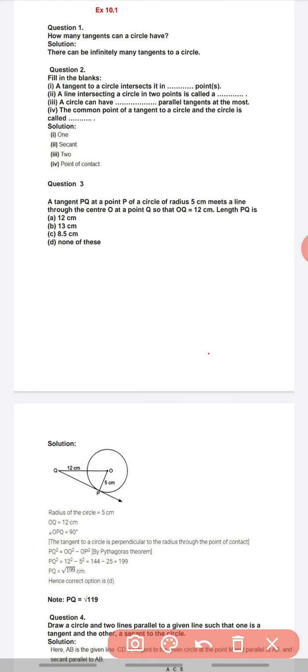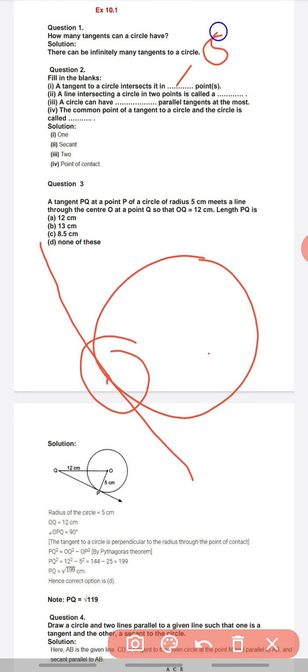Question number second, fill in the blanks: A tangent to a circle intersects in dash points. Agar aapke paas koi circle ho aur ek tangent is circle pe tangent hai, now the question is this tangent will intersect the circle at how many points? If we talk about the definition of tangent, that means it will be at one point, single point, because we know that there is only one common point between the circle and a tangent.